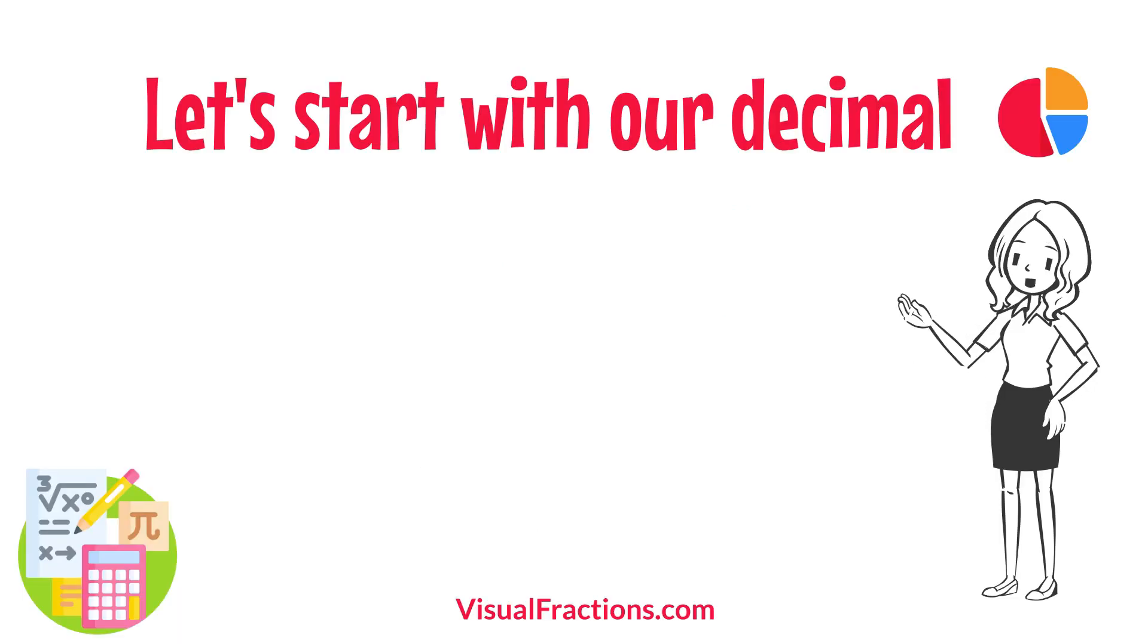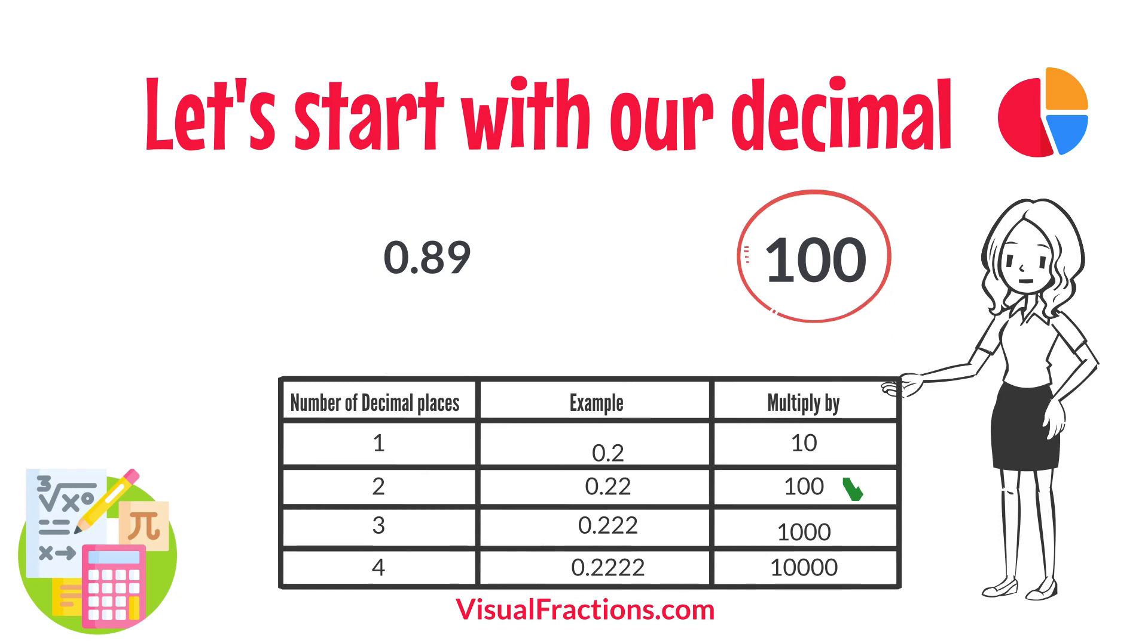Let's start with our decimal, 0.89. Notice there are two digits to the right of the decimal. This places it in the hundredths position.